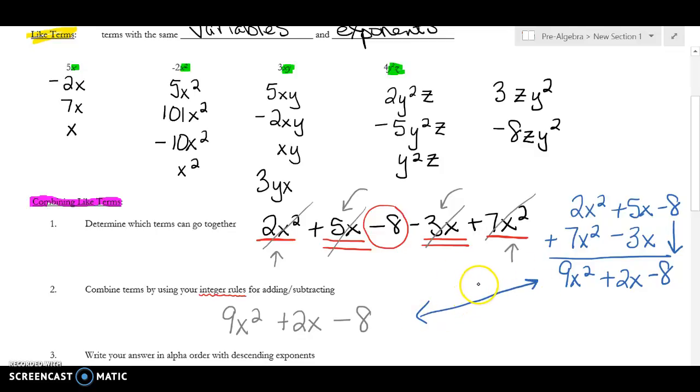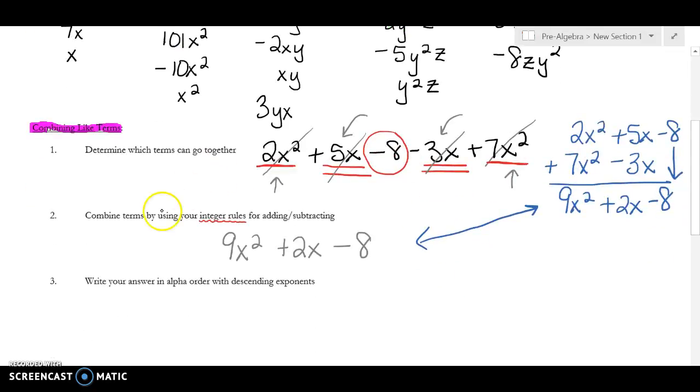So if you notice, I get the same answer both ways. They're just, it's a different way to look at it. The last thing that you need to do is you need to write in alpha order. So like x would come before y. And then you have to go in exponents going down. You see how I went x², then x, and then no x. So if I have a problem that says 3x - 7x², I'm going to rewrite that as a -7x² and a positive 3x because I want my bigger exponent to go first.